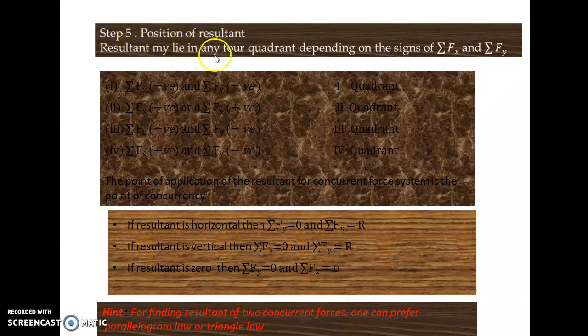Position of resultant: Resultant may lie in any four quadrant depending on the signs of sigma Fx and sigma Fy. If resultant is horizontal then sigma Fy equal to 0 and Fx equal to minus R. If the resultant is vertical then sigma Fx equal to 0 and sigma Fy equal to R. If the resultant is 0 then sigma Fy equal to 0 and sigma Fx equal to 0.